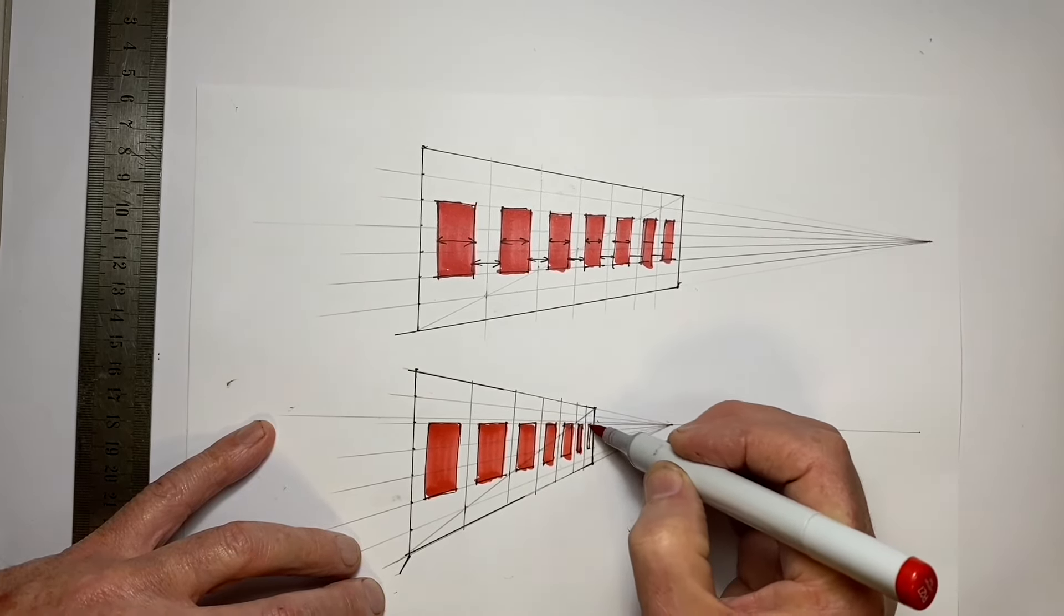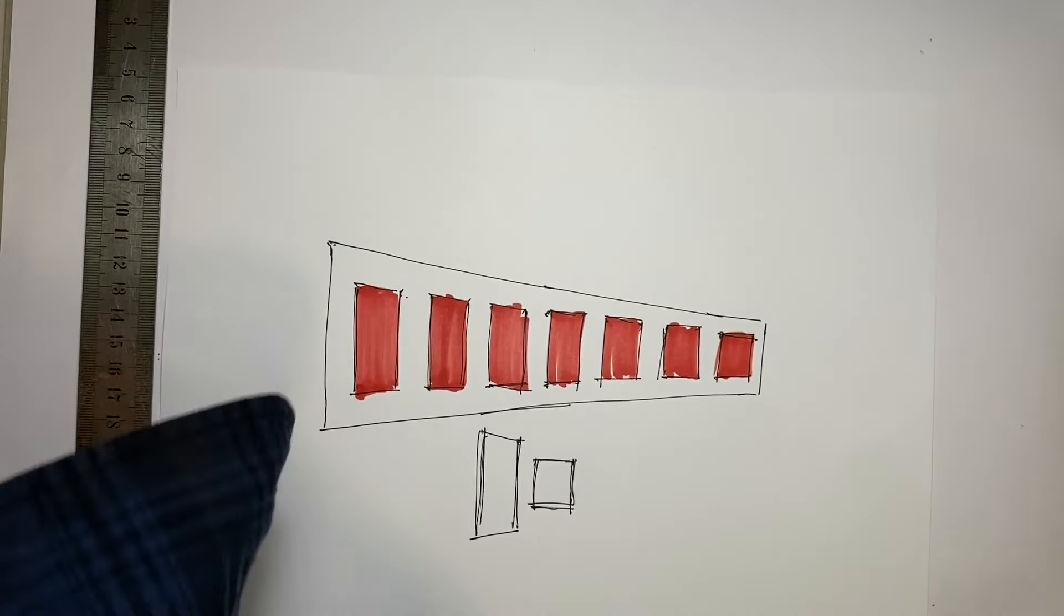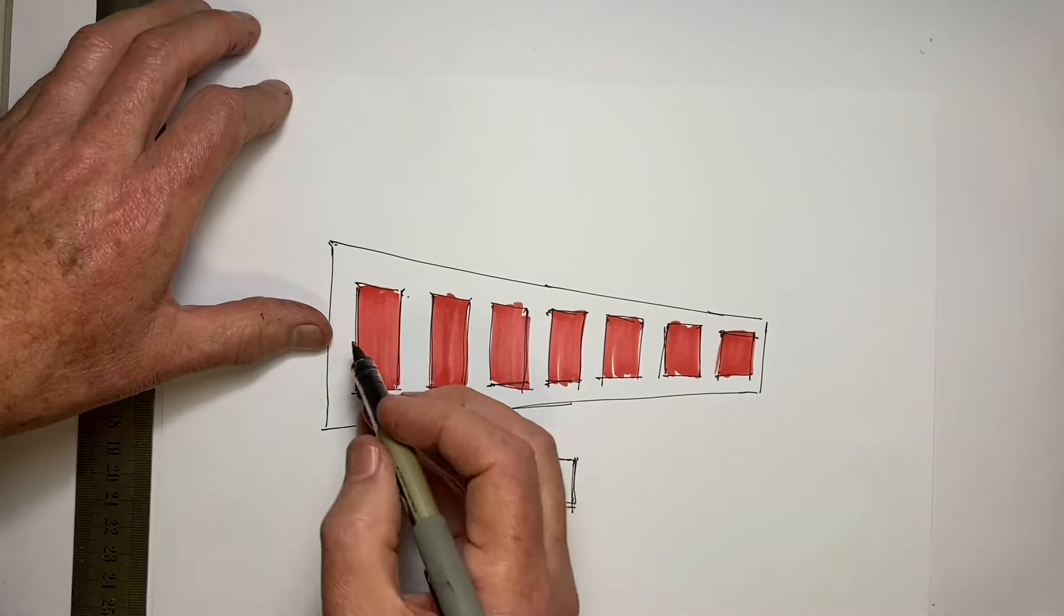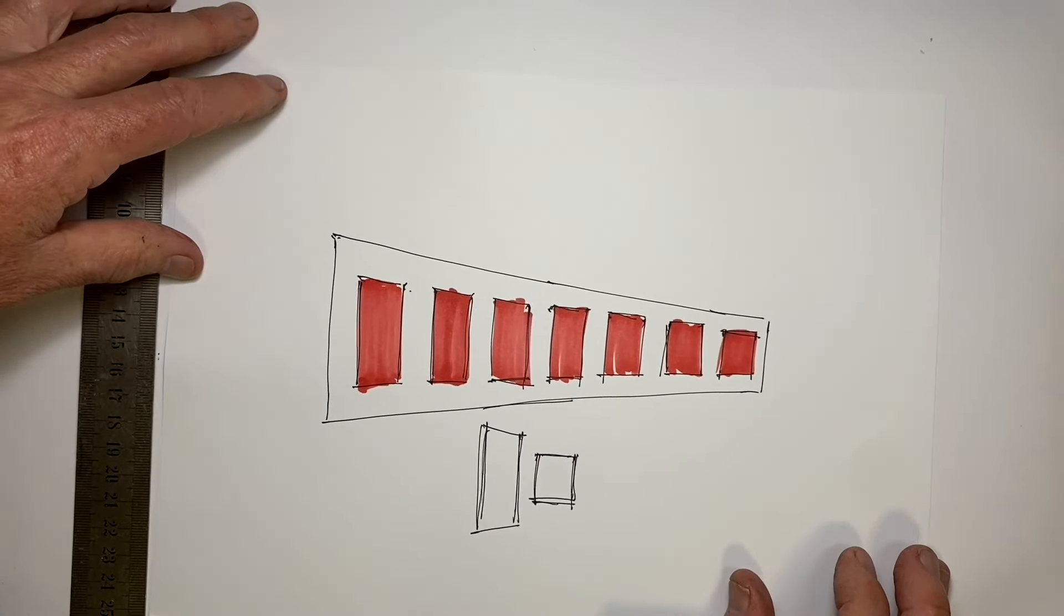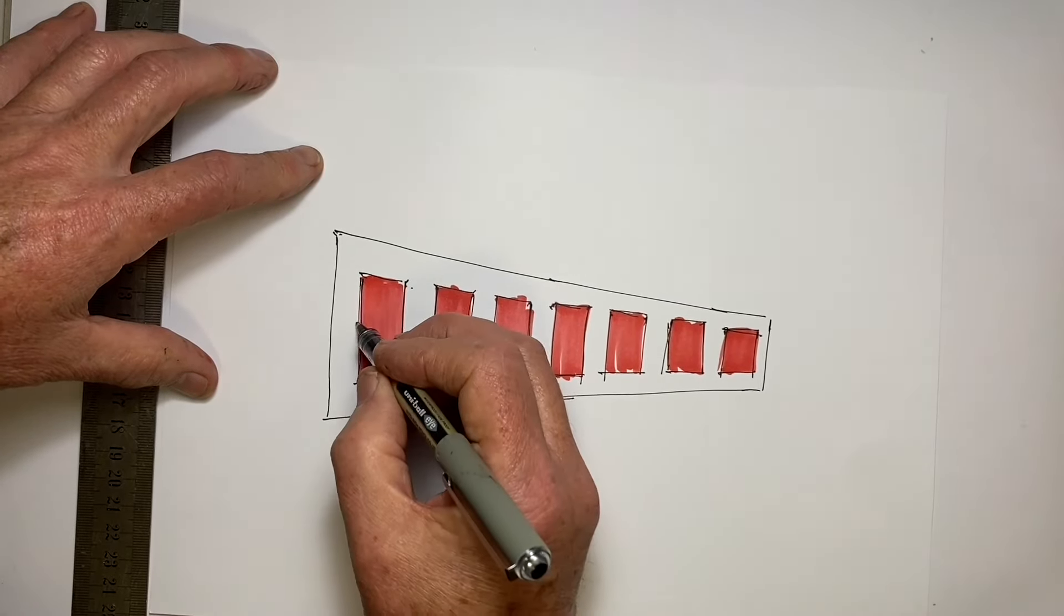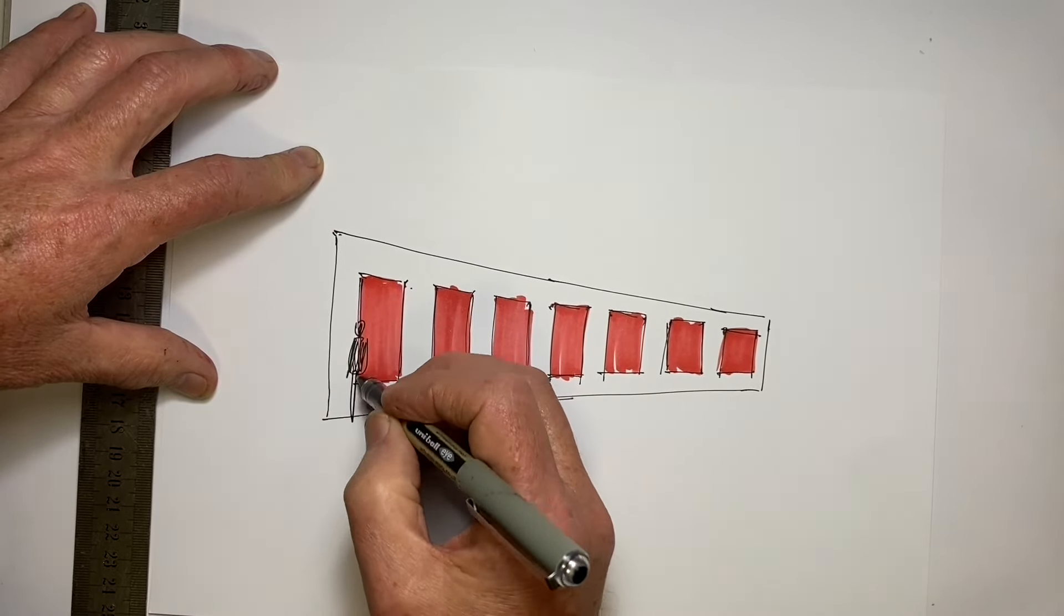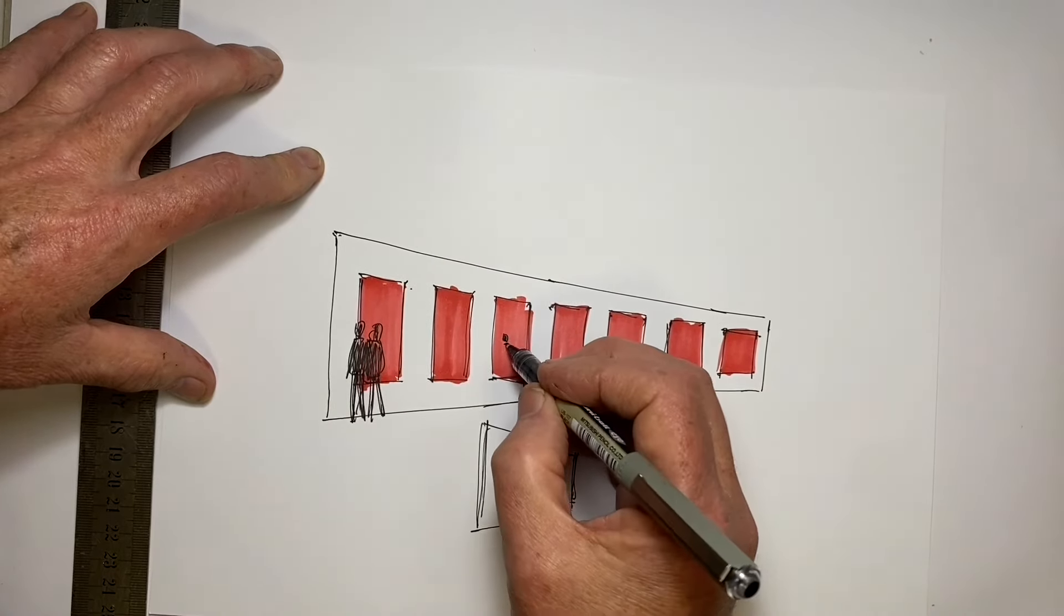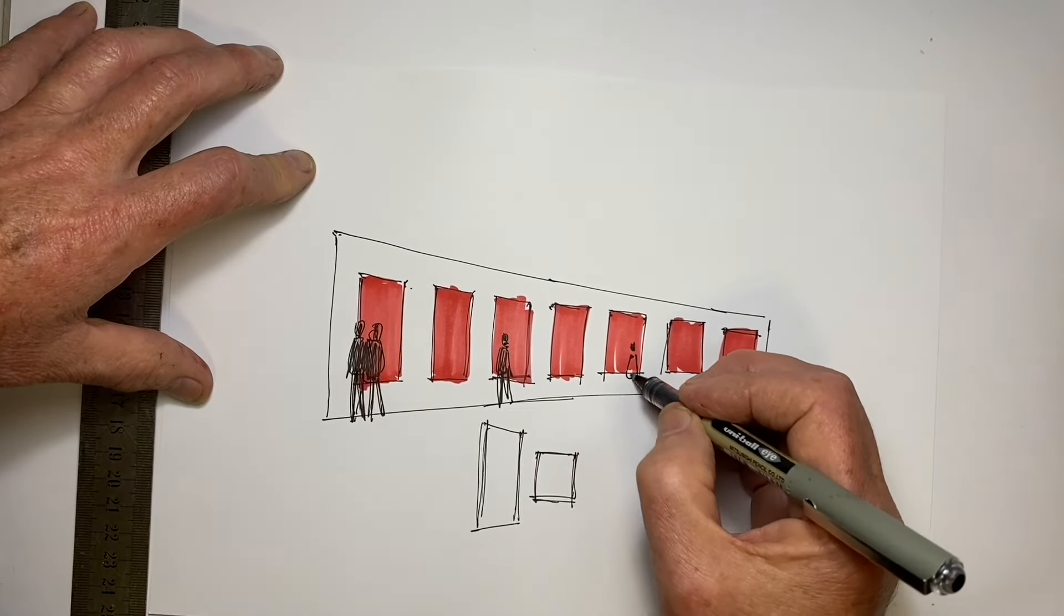A good way to compare the effectiveness of what we've drawn, to see whether we're getting it right or getting it wrong, is to add some figures all the way along our wall. Because if we've got our proportions correct, then the figures should look as though they go with our wall and our windows and also with each other. So I observe where eye level is going to be and I just add some figures all the way along. I'm being careful to align their heads and their feet on the correct perspective lines.